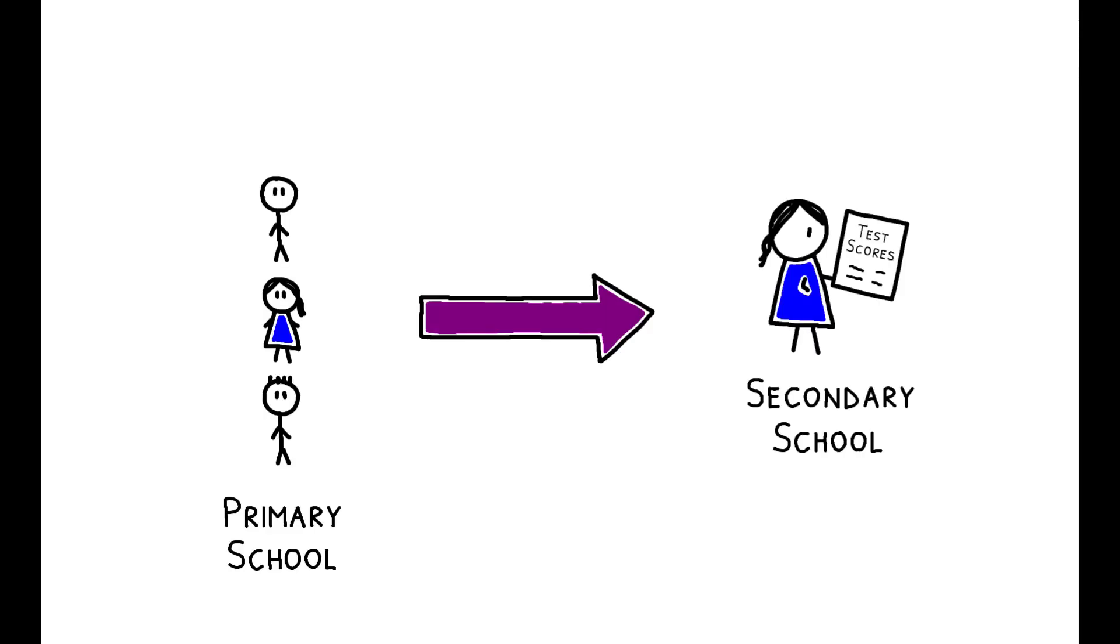And they find that students achieve higher scores in a subject throughout secondary school if they had a higher rank in that subject during primary school. A one standard deviation increase in rank is associated with an increase in later scores of 0.084 standard deviations.